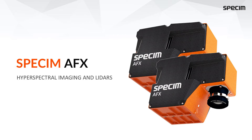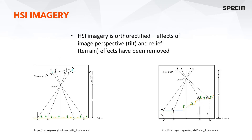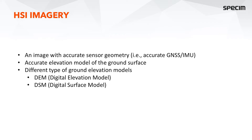Our next topic is hyperspectral and LiDAR data fusion. I'll start with the hyperspectral imagery. Hyperspectral imagery needs to be orthorectified — you want to remove the effects of image perspective, sometimes referred to as tilt, and then relief, which are terrain effects coming from the variation of the ground elevation of the earth. To do that, you need an image with very accurate sensor geometry, meaning an accurate GNSS IMU unit.